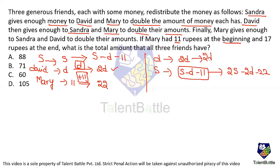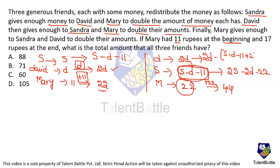After David's redistribution: David doubles Sandra's amount (s − d − 11) by giving her that same amount, and doubles Mary's 22 by giving her 22. David now has: 2d − (s − d − 11) − 22 = 3d − s − 11. Sandra now has 2(s − d − 11) = 2s − 2d − 22. Mary now has 44.